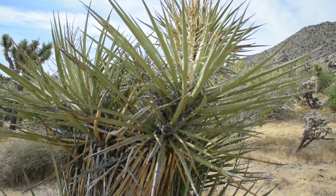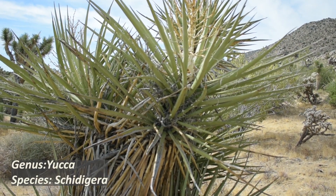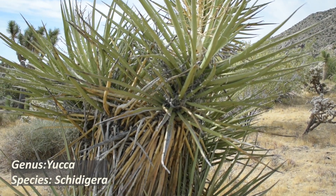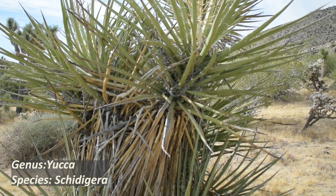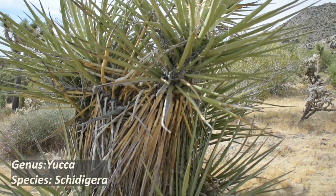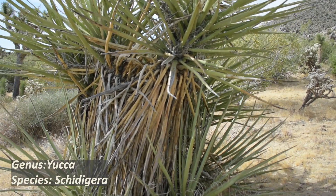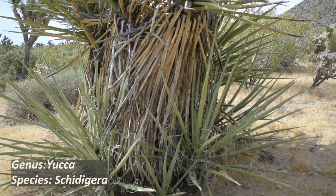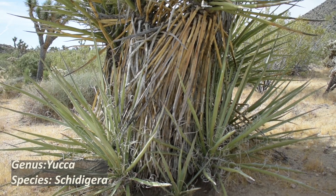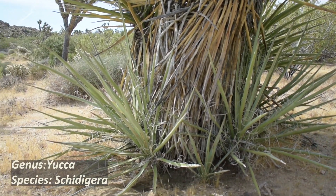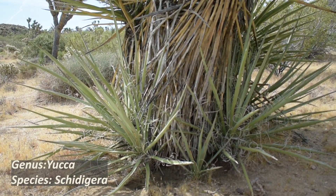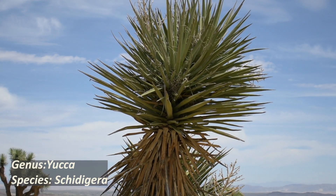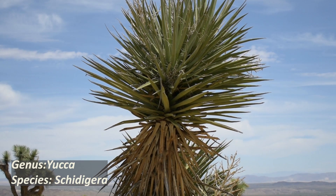The Mojave Yucca, known as the Yucca schidigera, is often confused with a Joshua Tree when they are young. They are rarely more than seven feet in height, with multiple trunks that occasionally branch out. They can be distinguished from a Joshua Tree by their much longer and broader leaves.